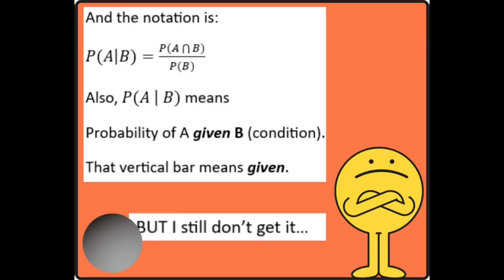And the notation is probability A given B equals probability of A and B divided by probability of B only. That vertical bar between A and B means given the condition. Yes, but I still don't get it.